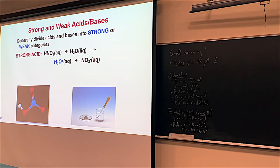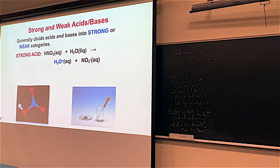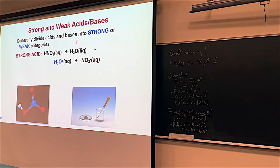Strong acids are strong because they dissociate 100%. In the last section, we talked about equilibrium, where we use double-sided arrows. When it comes to strong acids and strong bases, we're going to go back to using a single direction arrow — showing that all reactants are turned into products. HNO₃, nitric acid, is a strong acid. It reacts with water 100%, turning into hydronium — the hallmark of acids — and a nitrate ion.